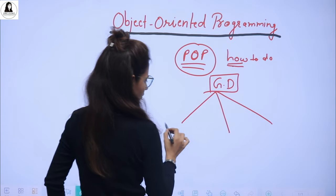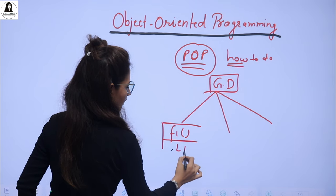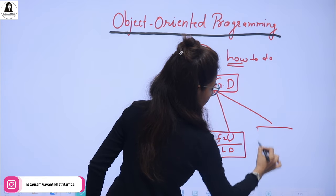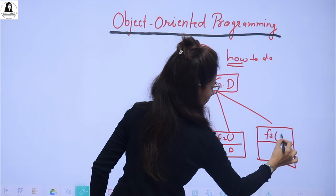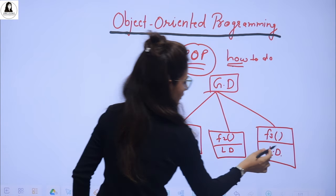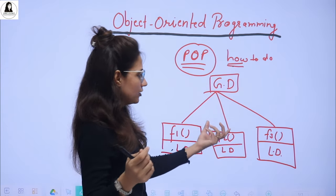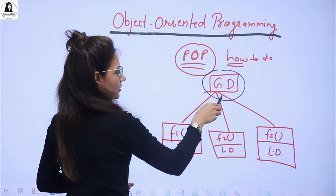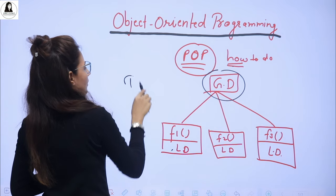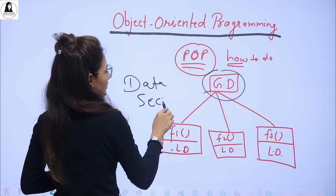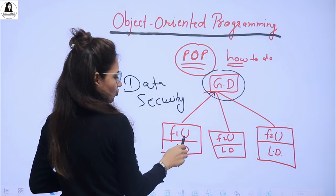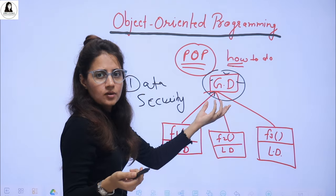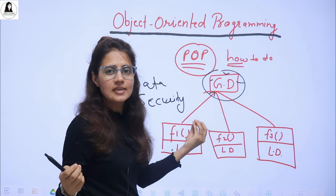This is function one, and this function has its own local data — LD means local data. So like this we have three functions, and every function has its local data, and some global data exists in our program. Data is passed in arguments. The global data is accessible by all the functions. So in this approach there is less data security, because if one function is accessing this data, it can modify it, and so can every other function. Data is moving freely in the program, so there is less data security.